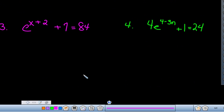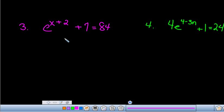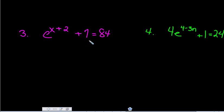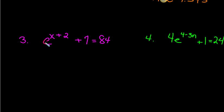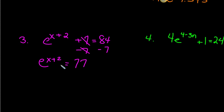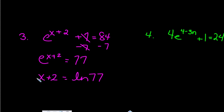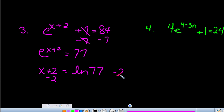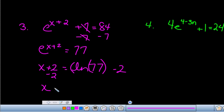Question three adds another dimension: there's a plus seven on the left side. We have to isolate the exponential part. The plus two is part of the exponent of e, so we can't separate it, but we can remove the plus seven by subtracting, giving e to the x plus 2 equals 77. Converting to a logarithm: x plus 2 equals the natural log of 77. Subtract 2, and be careful in your calculator to single out the 77. You get x approximately equal to 2.343.